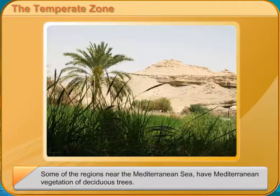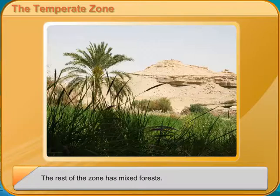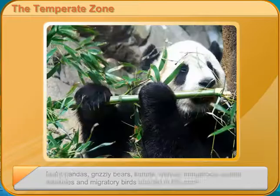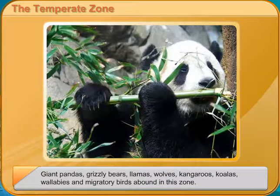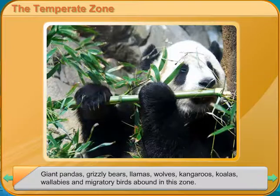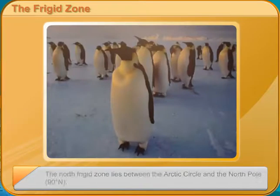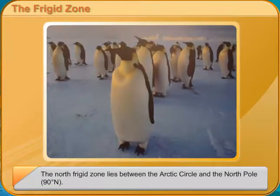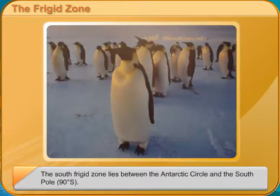The Frigid Zone. The north frigid zone lies between the Arctic Circle and the North Pole, 90 degrees north. The south frigid zone lies between the Antarctic Circle and the South Pole, 90 degrees south. This zone is the coldest region on Earth. The polar regions remain frozen for most of the year. The winter here is very long and severe. The poles have six months of continuous darkness in winter, and in summer, there is continuous light for weeks together.